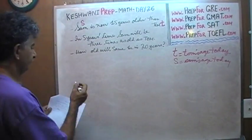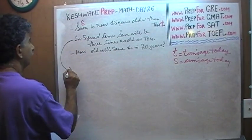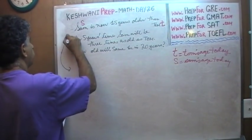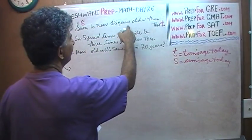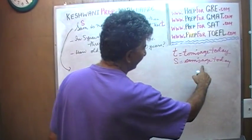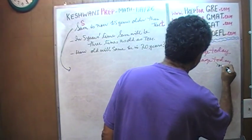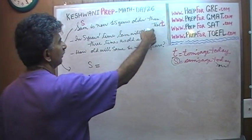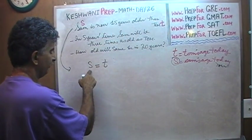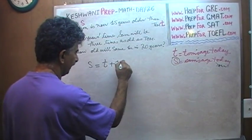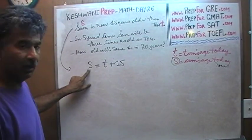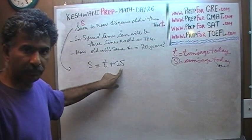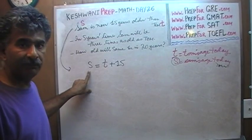So what's the first sentence? Sam is now 15 years older than Tom. We are using S to represent Sam's age today. Whatever Tom's age is — that's T — Sam's age is 15 more than that. So if you add 15 to Tom's age, you get Sam's age today. That's our first equation: S = T + 15.